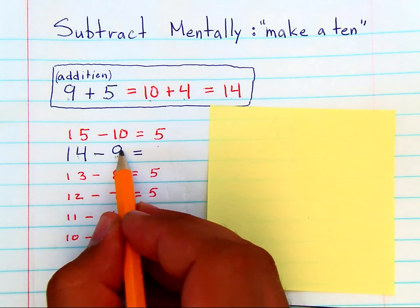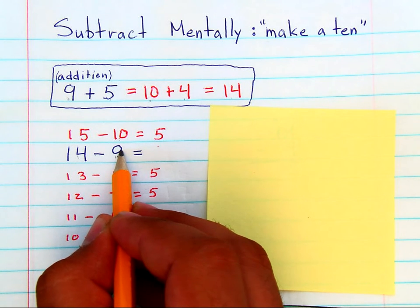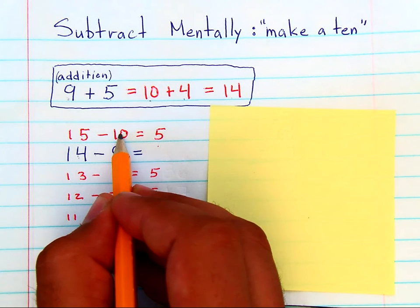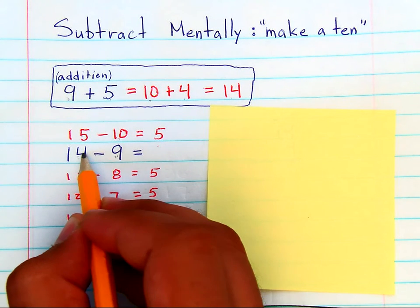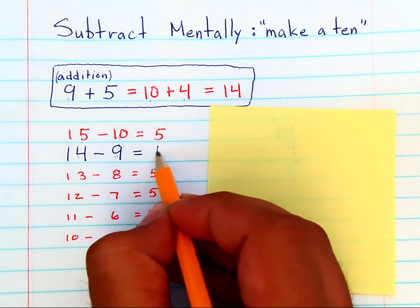14 minus 9 will get you the same thing, because the difference between 15 and 10, and the difference between 14 and 9, is the same.